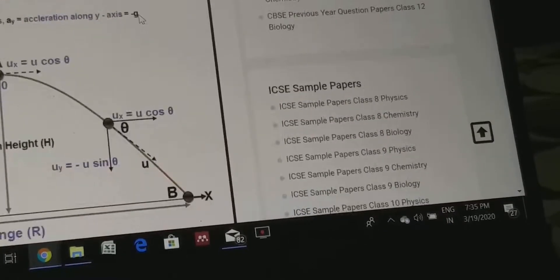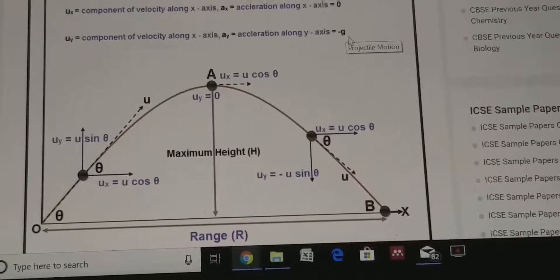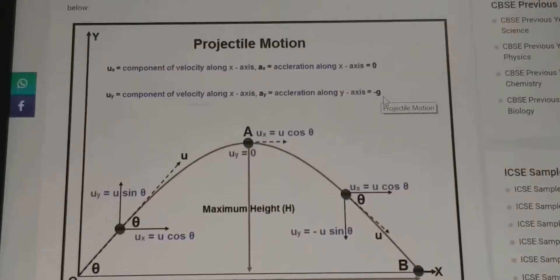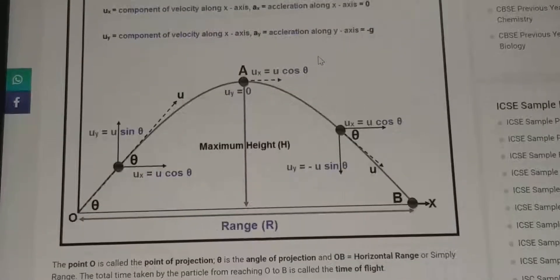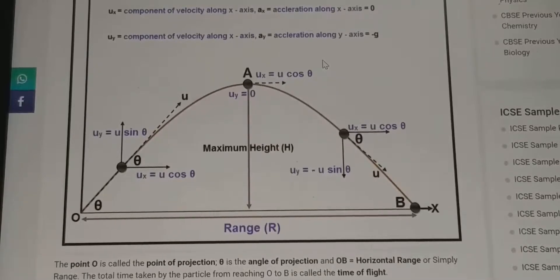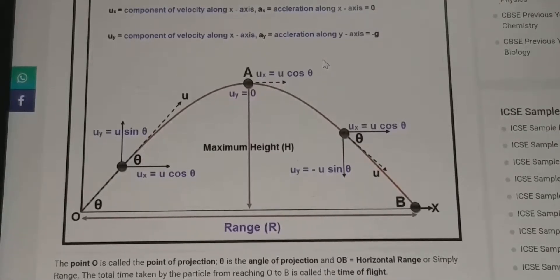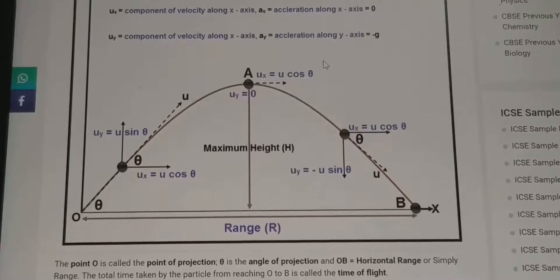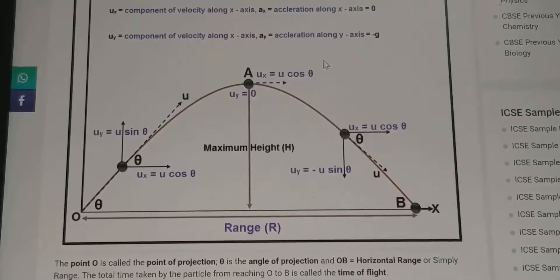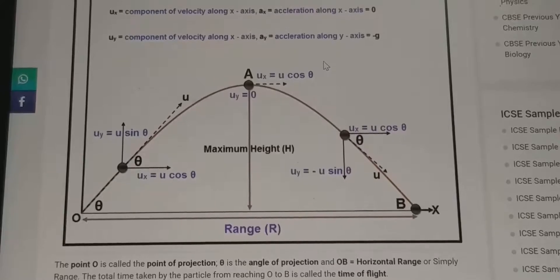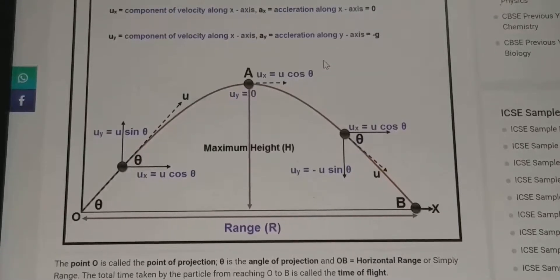Now we go to a special kind of curvilinear motion called projectile motion. Whenever a body is thrown at an angle with the ground — not perpendicular, but at any angle — the particle or body follows a curved path, which is called a projectile path. If thrown vertically upward at 90°, it follows a straight path up and back down, but when thrown at an angle it follows a curved path, which is always a parabolic path.